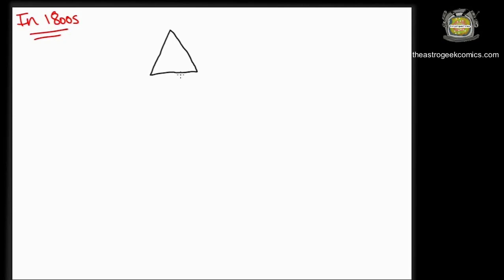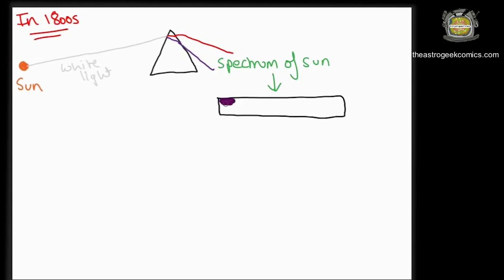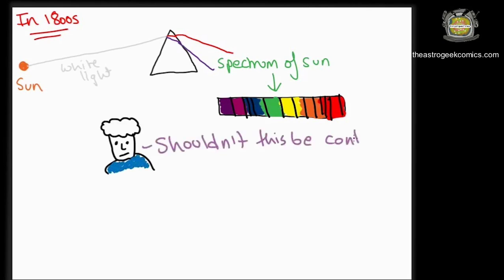In the early 1800s, using better prisms, it was found that the spectrum of light from the sun wasn't exactly continuous but had dark bands or lines all over it. These lines cannot be observed in our daily experience but can be resolved using better instruments.